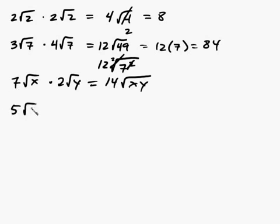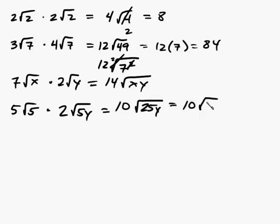And how about 5 root 5 times 2 root 5y. So multiply the coefficients first. 5 times 2 is 10. And what's in the radicals are root 5 times root 5y, which is going to be root 25y. Well, this can be written as 10 times root 25 times root y. You can break up a product into two factors here. So this would be equal to 10. Radical 25 is just 5. And the root y is just rad y. So equal to 10 times 5 is 50, rad y.